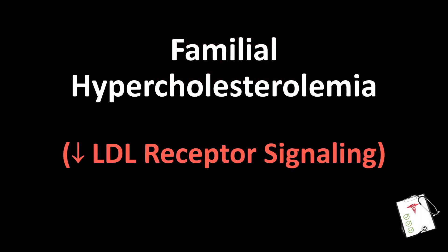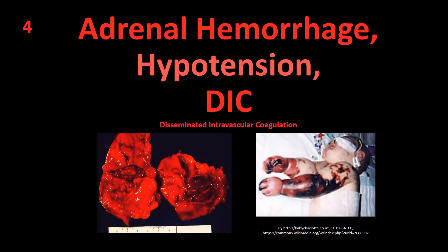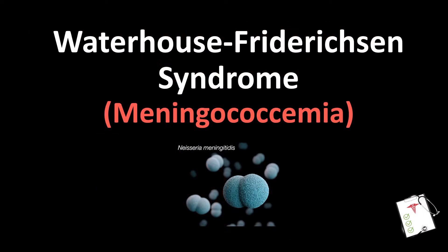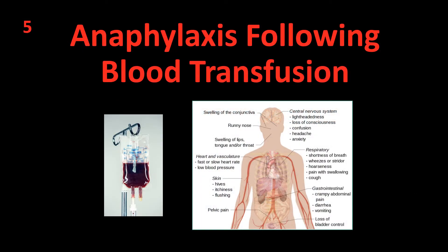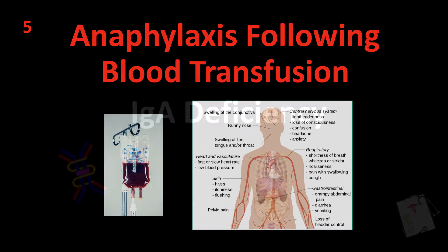Number 3: Achilles tendon xanthoma. Answer: Familial hypercholesterolemia with decreased LDL receptor signaling. Number 4: Adrenal hemorrhage, hypotension, DIC. Answer: Waterhouse-Friderichsen syndrome — meningococcemia.